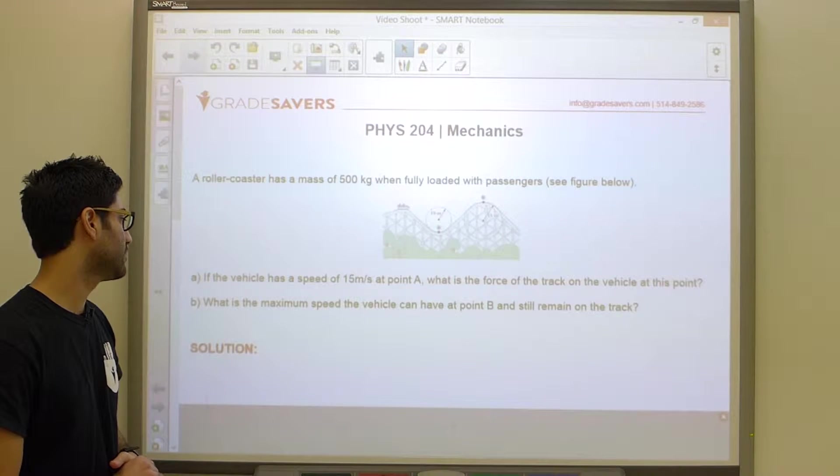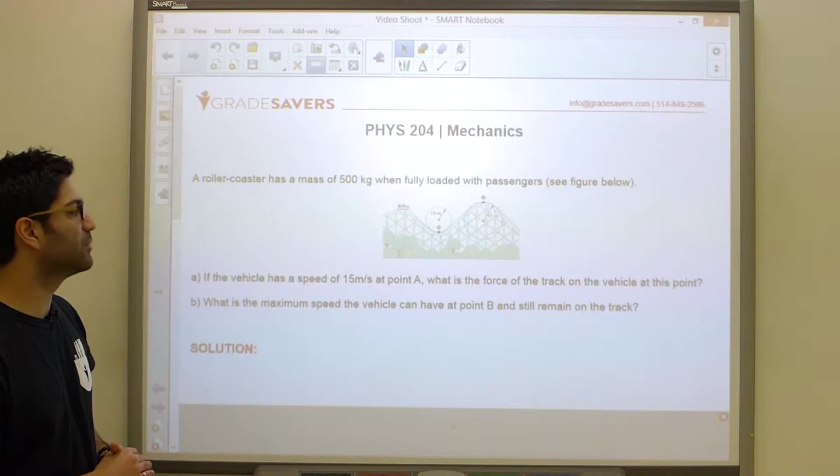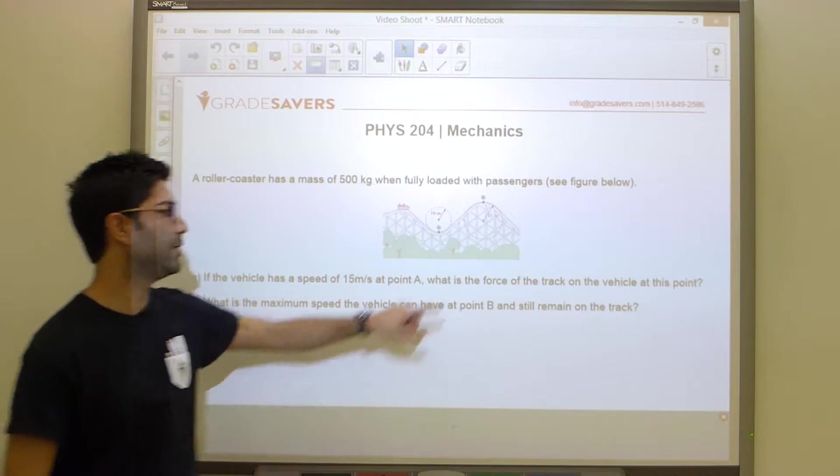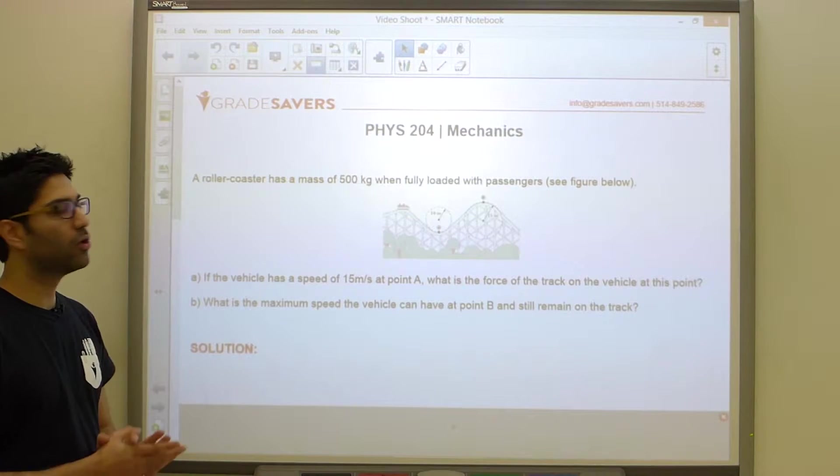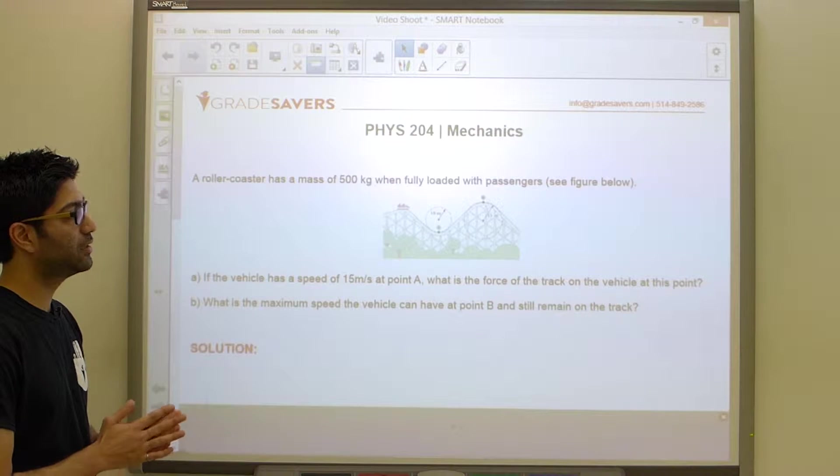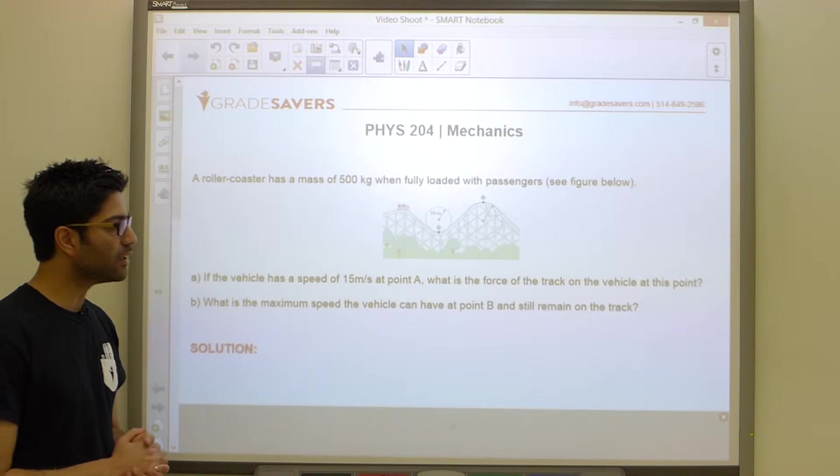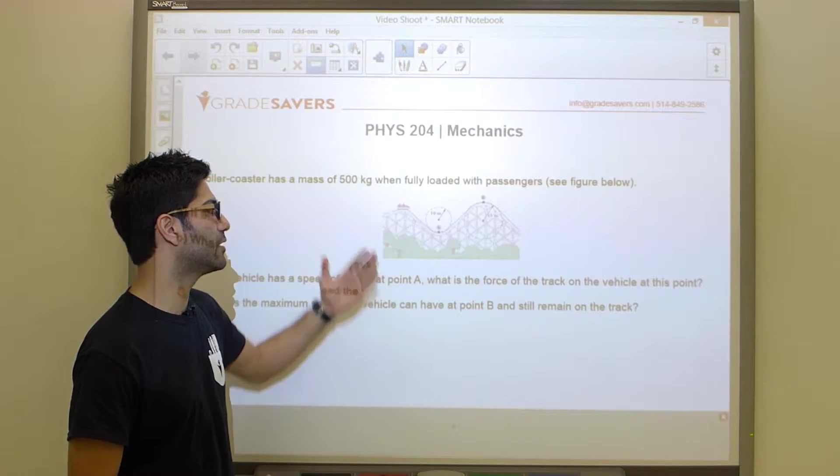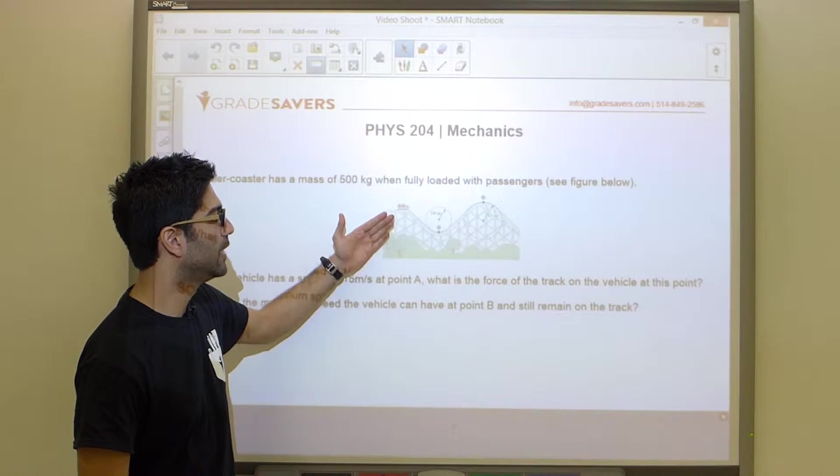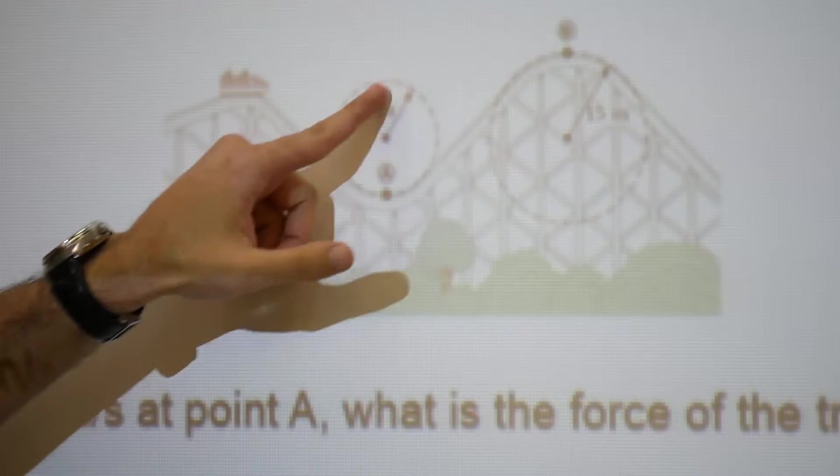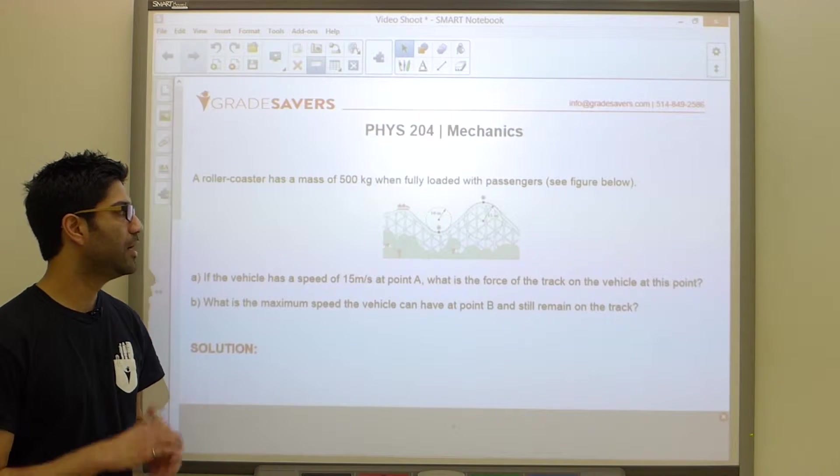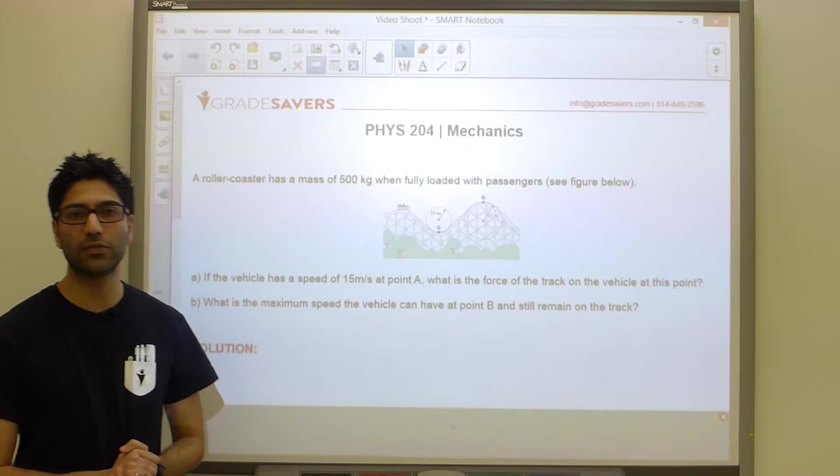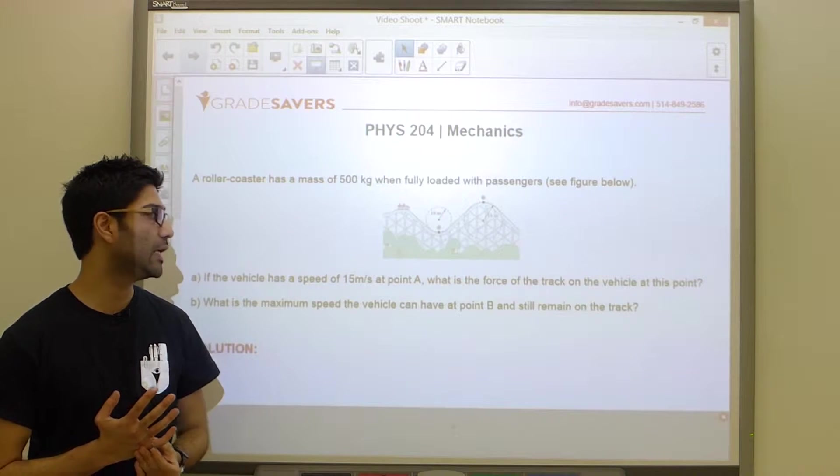Part B asks what is the maximum speed the vehicle can have at point B and still remain on the track. In this problem, there's a few things you need to understand. The motion of your particle is curved, and the fact that they're showing you circles should make a bell go off in your head. It's probably a good idea to talk about centripetal acceleration.